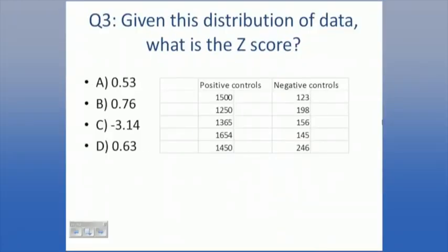Given a distribution of data, what is the Z-score for this assay? You'll need a calculator here - at least Excel or a spreadsheet. The answer is 0.53. So it's a good assay, well worth running and something you should pursue.